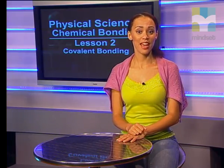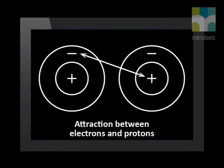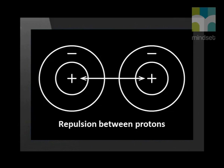Let's start by imagining that there are two hydrogen atoms moving closer together. There are three forces that act on the atoms at the same time. The first force is the repulsive force between the electrons of the atoms, since like charges repel. The second force is the attractive force between the nucleus of one atom and the electrons of another. The third force is the repulsive force between the two positively charged nuclei.